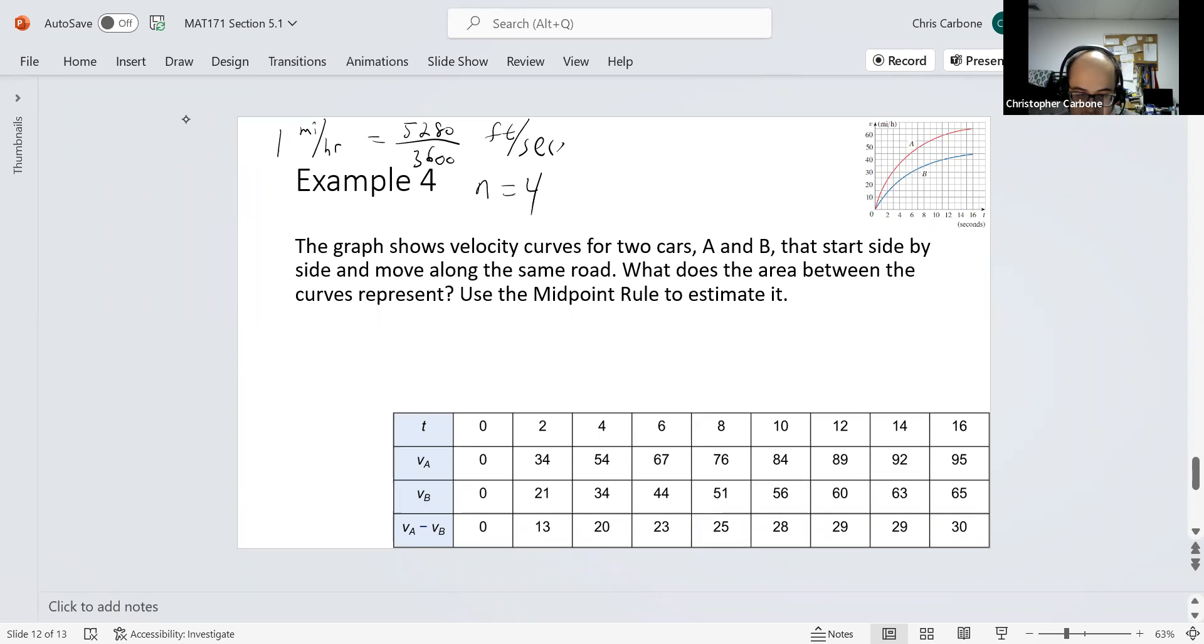We are going to use a sample, an n of 4, and delta T to be also that value of 4. The midpoints that we are going to use are going to be T sub 1 bar equals 2, T sub 2 bar equals 6, T sub 3 bar equals 10, and T sub 4 bar equals 14.